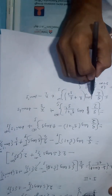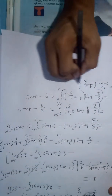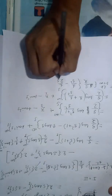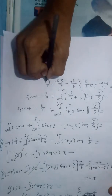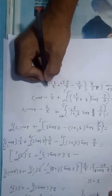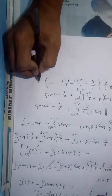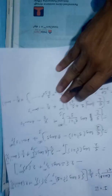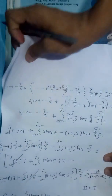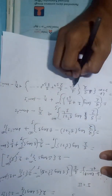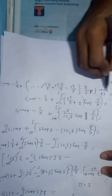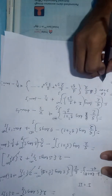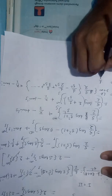To handle the limit as s → ∞ for the term (s/2)·log(1 + 1/s²), we use the expansion: log(1 + 1/s²) = 1/s² − 1/(2s⁴) + 1/(3s⁶) + ⋯. Multiplying by s/2, all terms go to 0 as s → ∞, so the whole term becomes 0. Thus the upper limit contributes nothing.